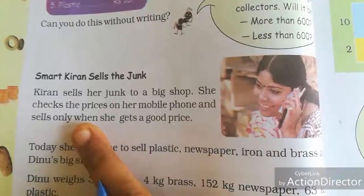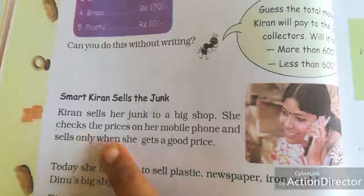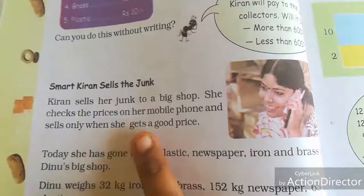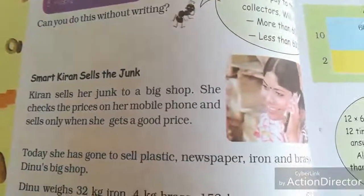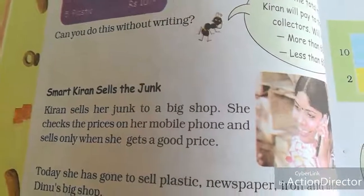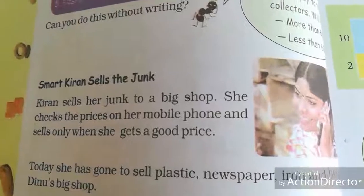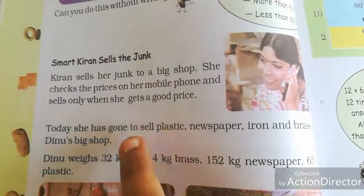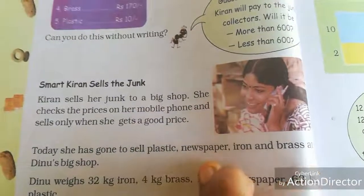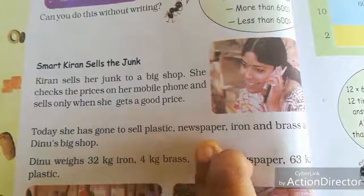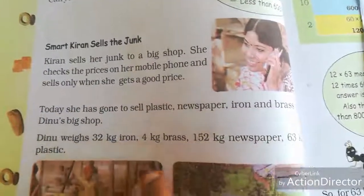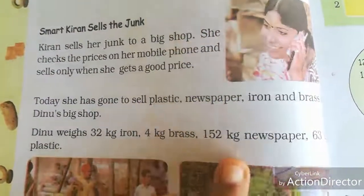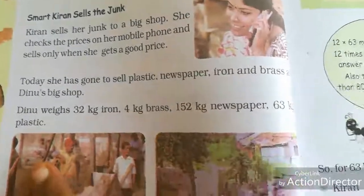Next, smart Kiran sells the junk to the big shop. She checks the price on her mobile and sells only when she gets a good price. Today, she has gone to sell plastic, newspaper, iron, and brass at Dino's big shop. Dino weighs 32 kg of iron, 4 kg brass, 152 kg newspaper, and 63 kg plastic.